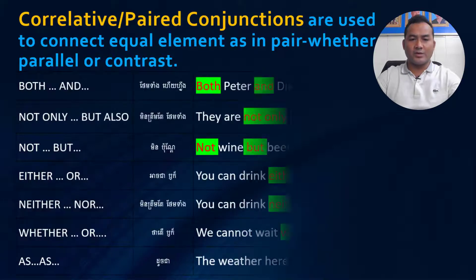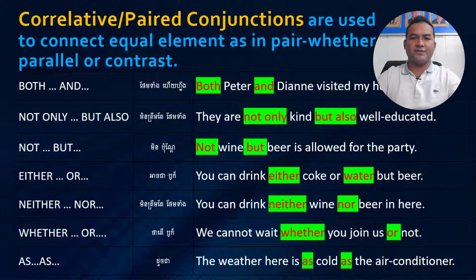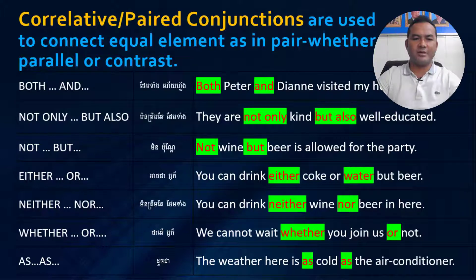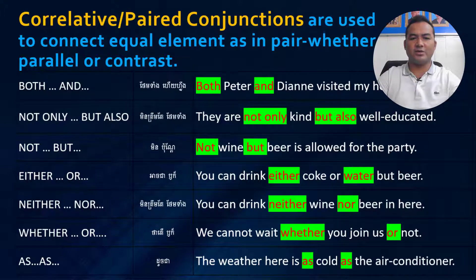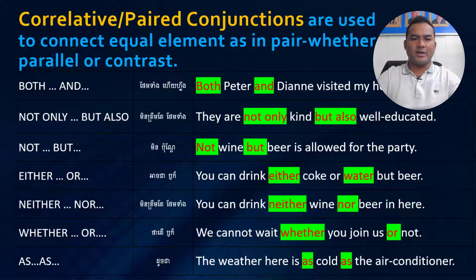In the pair conjunctions, we have: both/and, not only/but also, not/but, either/or, neither/nor, whether/or, and as/as. In the second column, I translate into Khmer, and in the last column, I also provide example sentences.